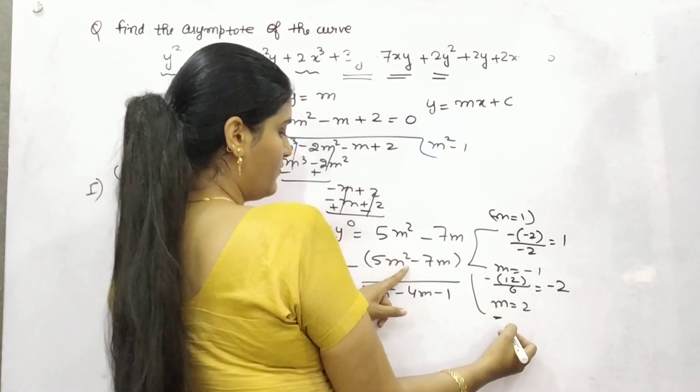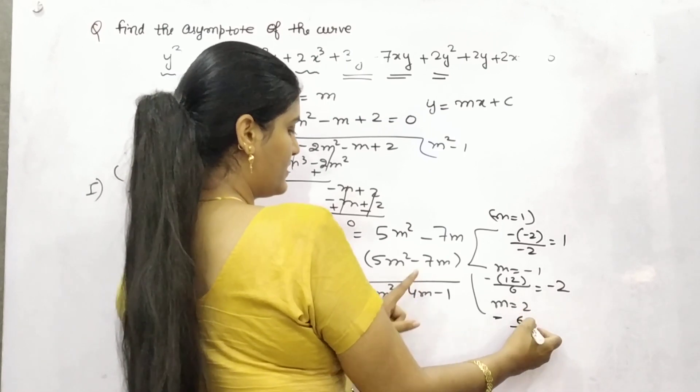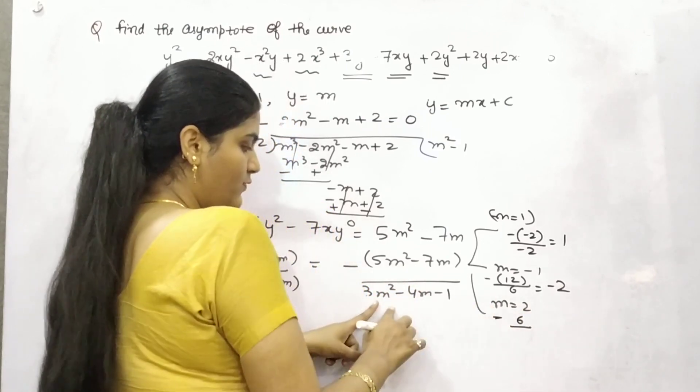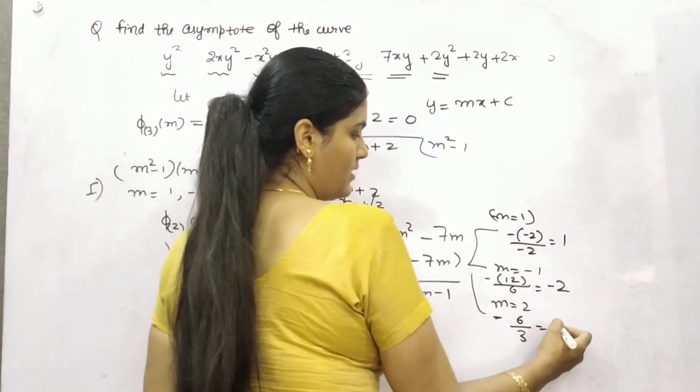And for m is equal to 2, minus 2 times 2 is 4, 5 times 4 is 20, minus 14, which is 6 and 2 times 4, 4 times 3, 12, minus 8, 4, minus 1, 3, again minus 2.